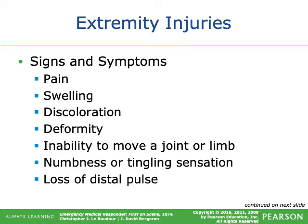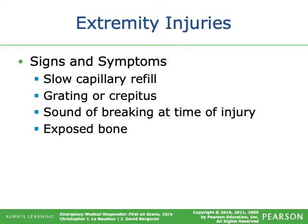Signs and symptoms of extremity injuries include pain, swelling, discoloration, deformity, inability to move a joint or limb, numbness or tingling sensation, and loss of a distal pulse. Absence of a distal pulse may mean inadequate perfusion to the distal tissues. Additional signs include slow capillary refill, grating or crepitus — the sound of breaking at time of injury — and exposed bone, which carries a major risk of infection that can become severe and life-threatening.